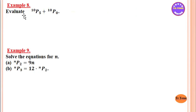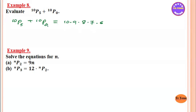The examples are 10P5 and 10P0. For 10P5 and 10P0: nP0 will be 1. For example, 4P0 equals 1.